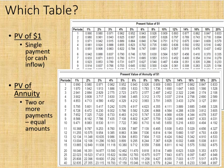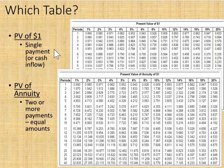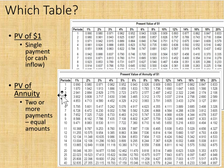The traditional way of calculating present and future value is to use tables, and many textbook publishers are still tied to these tables. There are four tables: present value of a dollar, present value of an annuity, future value of a dollar, and future value of an annuity. What students find most difficult is determining which table to use. Present value of a dollar is for a one-time payment only; present value of an annuity is for a series of equal payments.